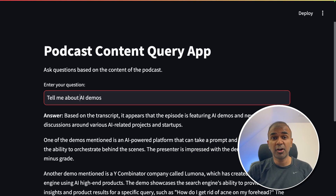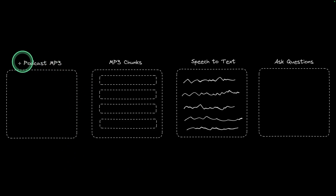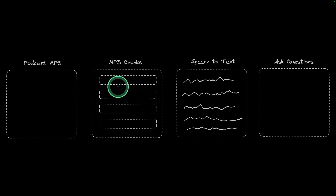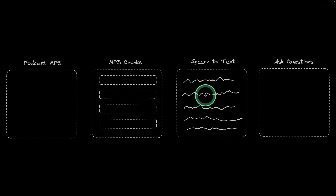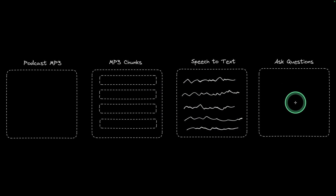Even if you have hundreds of podcasts, you should still be able to process that into a QA app. So initially, when you have the podcast MP3, it'll get divided into MP3 chunks, then that'll be transcribed from speech to text, and finally we are able to ask questions.